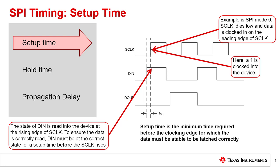Using SPI mode 0, the S-Clock idles low and the data is clocked in on the rising edge of the S-Clock. Setup time is the time required for a data input to be stable before the edge of the clocking signal to be latched correctly. In this example, DIN is set high so that at the rising edge of S-Clock, a 1 is clocked into the peripheral device. DIN must be set high first and stay high for a specific setup time so that the 1 is properly received.